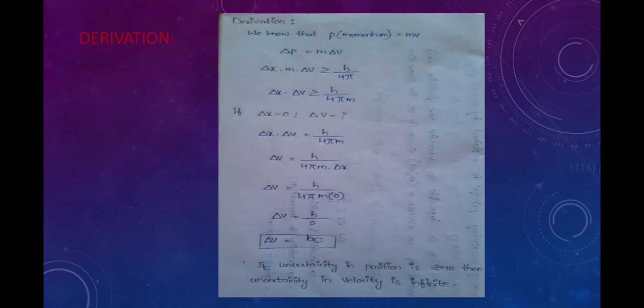If delta x, the uncertainty in position, is equal to zero, then what is delta v? From delta x into delta v equals h by 4 pi m, we get delta v equals h by 4 pi m into delta x. Taking delta x equal to zero, delta v equals h divided by zero, which means delta v is infinite.